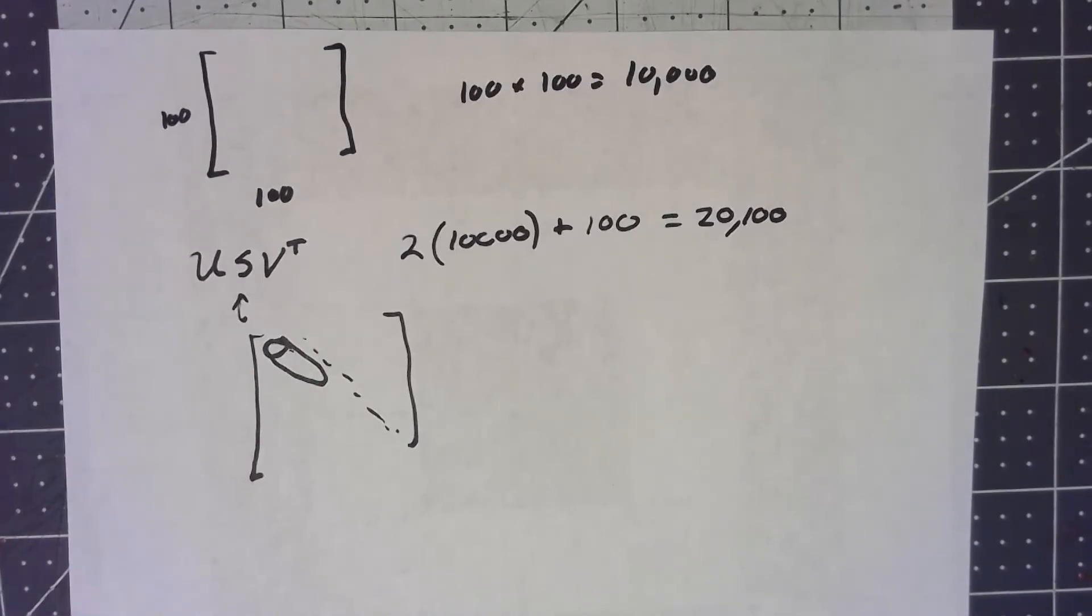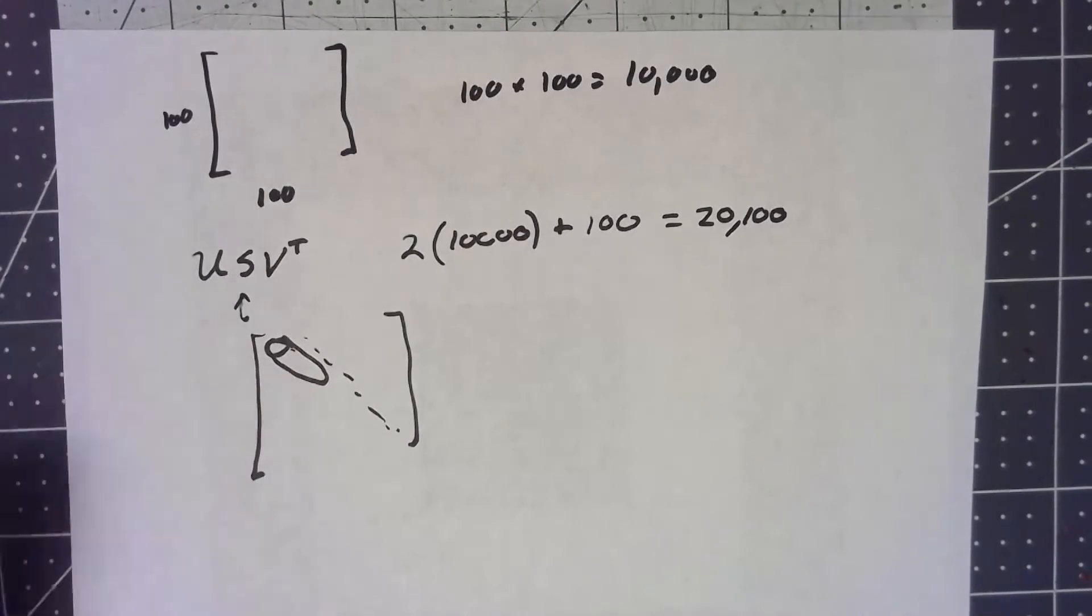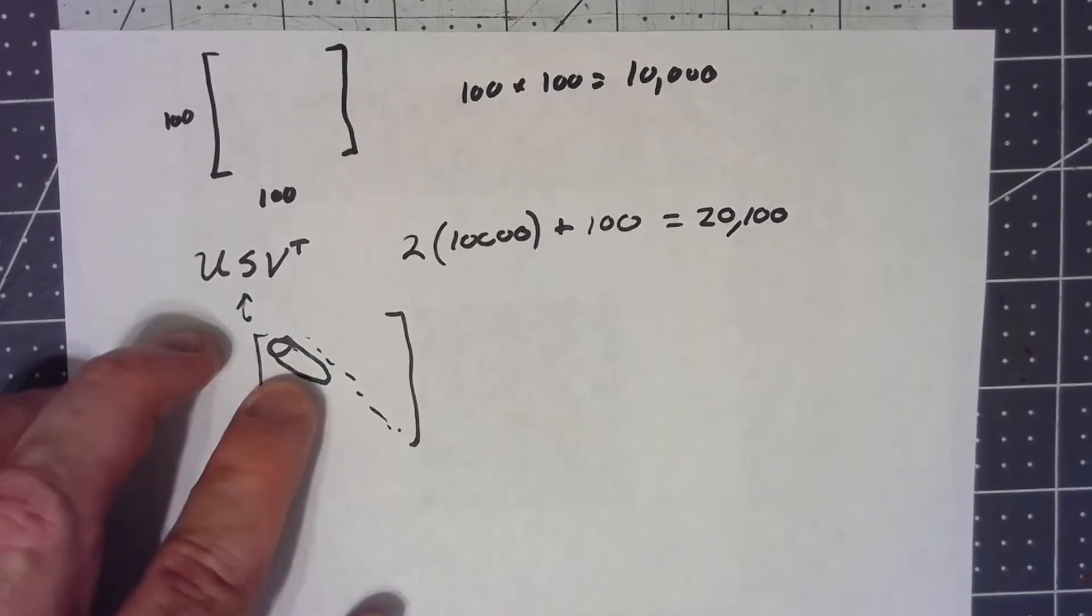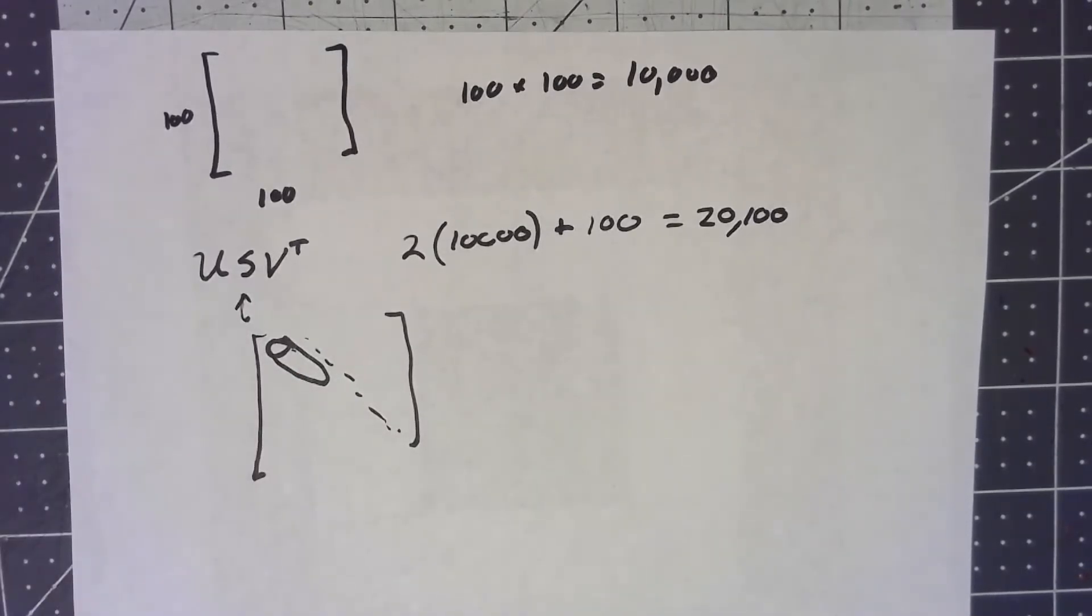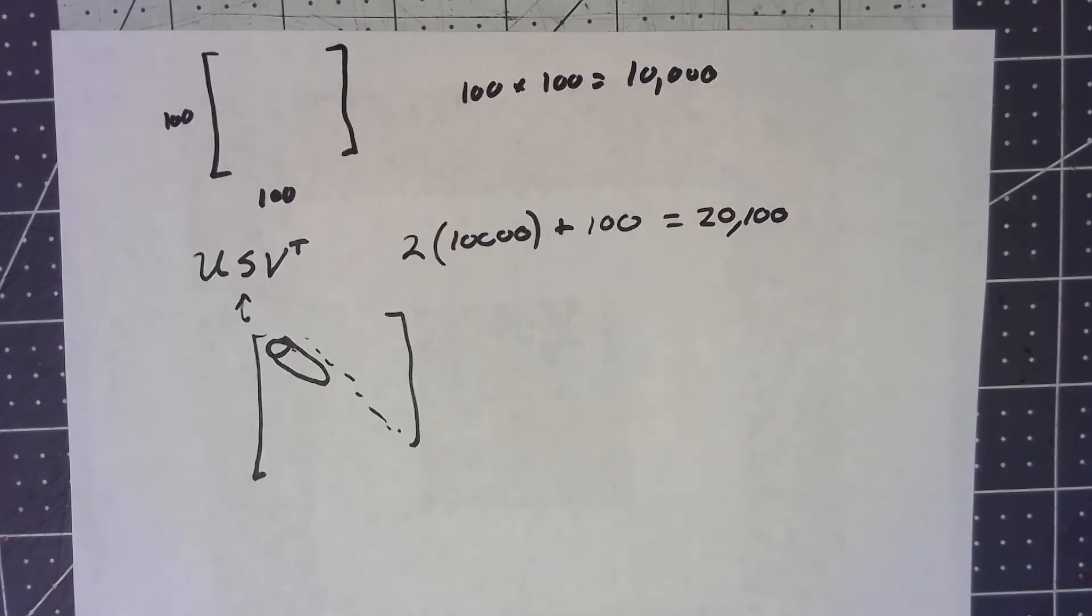So let's say, for example, that we only need, and this is something that depends on your application, but let's say that we only need the first 10 values to get a reasonable approximation of what the matrix is. The first 10 singular values are enough to get the general idea of what the matrix is.